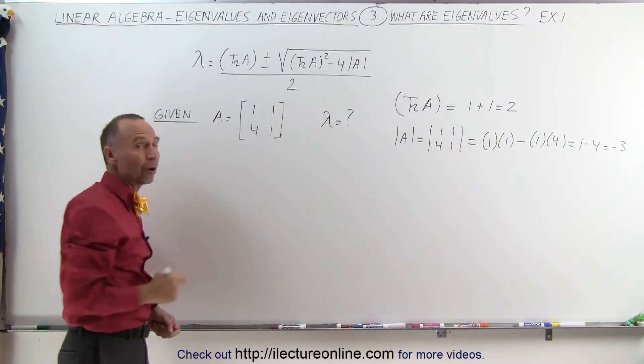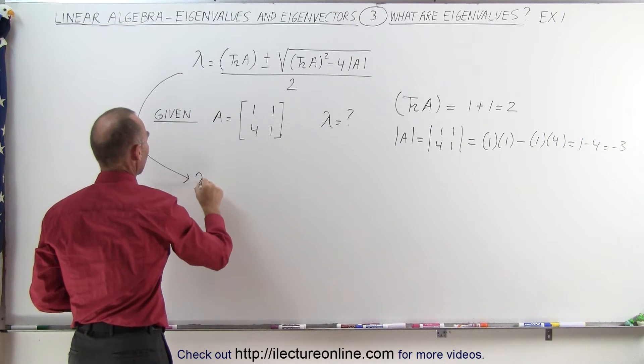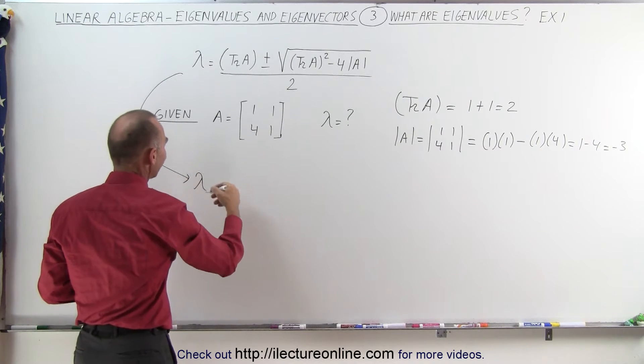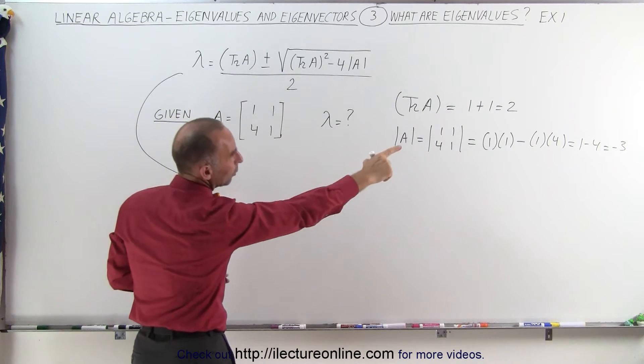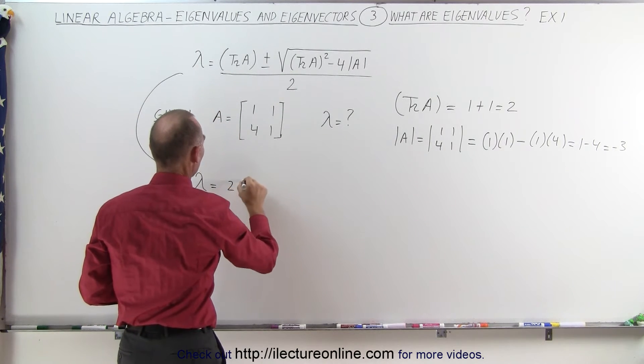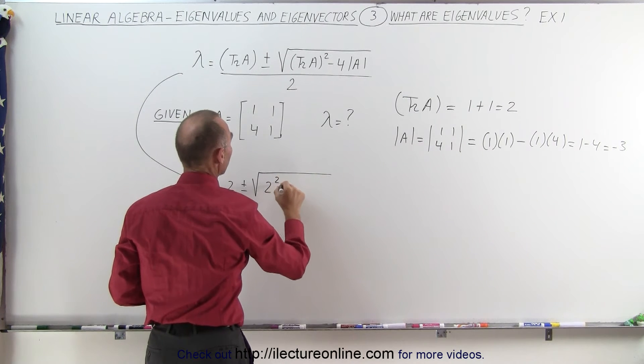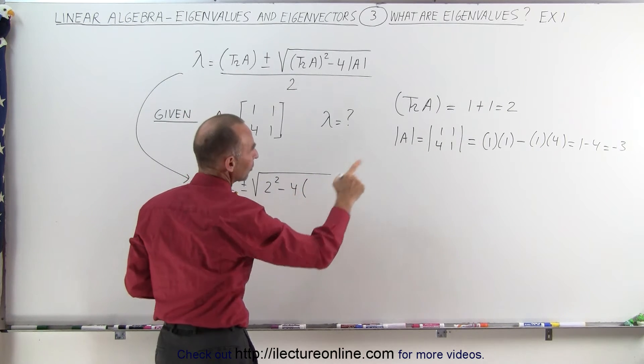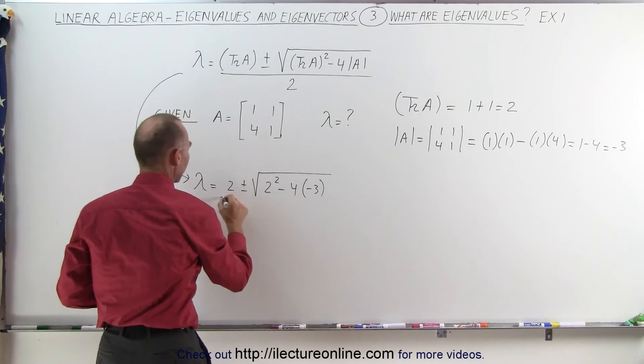Plugging all that into our equation, lambda, the eigenvalue, is equal to the trace of A, which is 2, plus or minus the square root of the trace squared, that's 2 squared, minus 4 times the determinant of A, which is -3, all divided by 2.